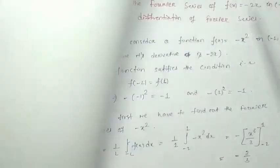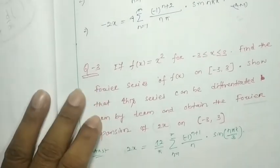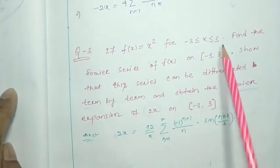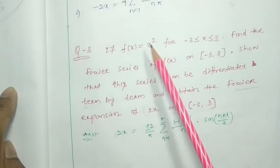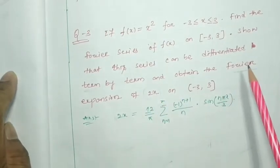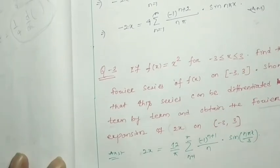We also discussed the questions f(x) = x·sin(x) and f(x) = -2x. At the end of last class, I gave you one question to do by yourself: f(x) = x² existing between -3 to 3. You had to find the Fourier series of this function, show it can be differentiated, and find the expansion of 2x. In our next class, we will discuss integration of Fourier series.